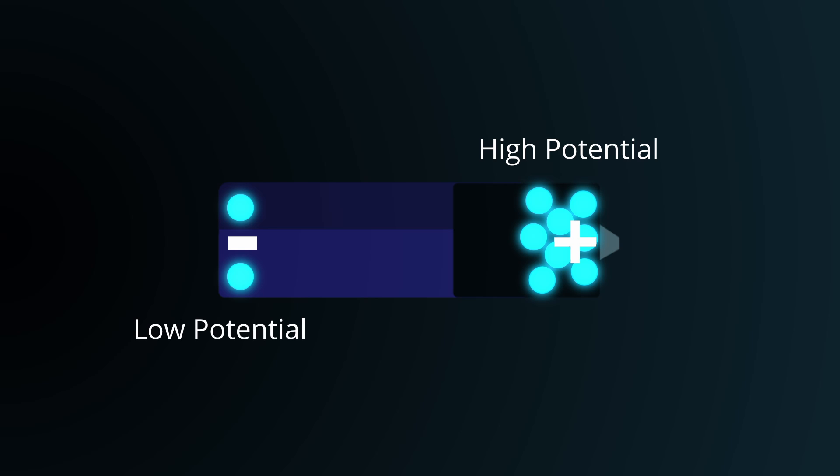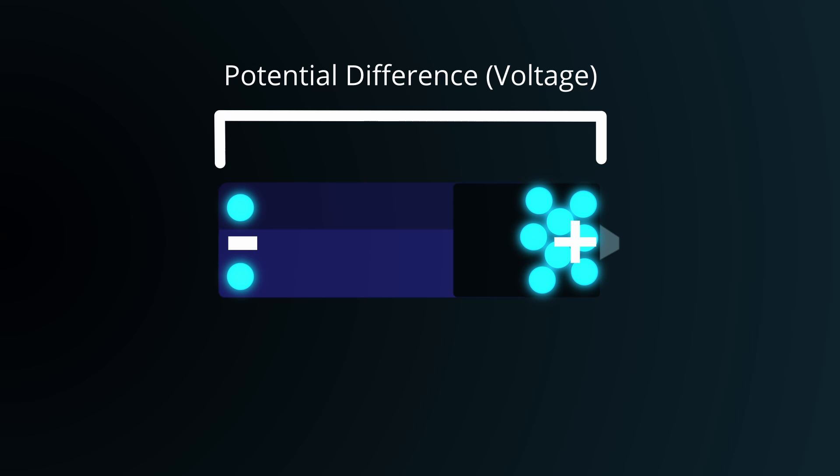This disparity between the two is what we call a potential difference, or voltage. Voltage, in essence, is this push or force that drives the charges. It's the hill in our water analogy.